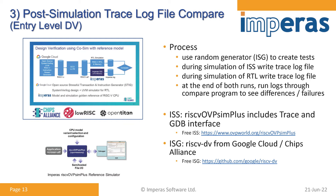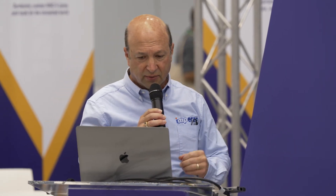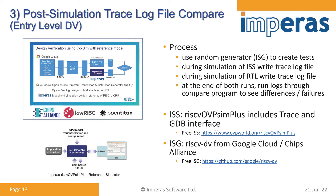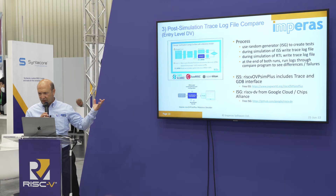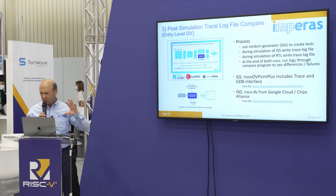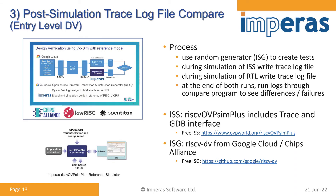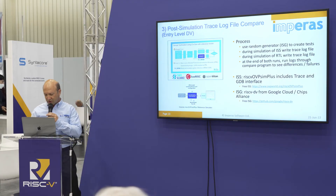There's a random instruction stream generator that allows you to generate tests to exercise the processor, and then you do the comparison. The reference model is the Empirous ISS, and the RISC-V OVP SIM+ is something we offer for free—there's a link available, and we'll be publishing the slides on the RISC-V website. The instruction stream generator we use here is the Google RISC-V DV instruction stream generator, but there are also other open source and commercial instruction stream generators.